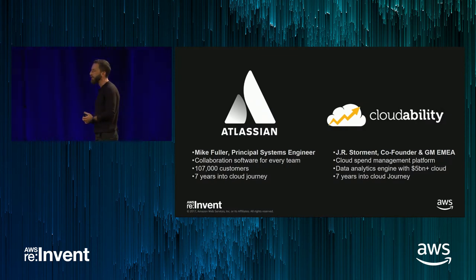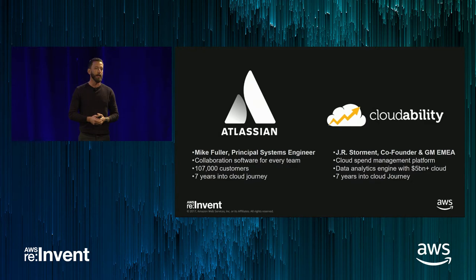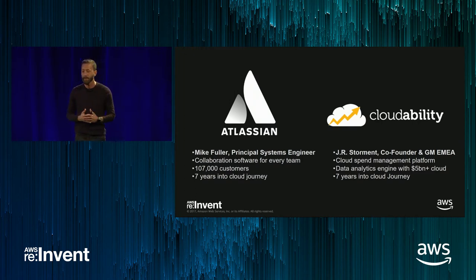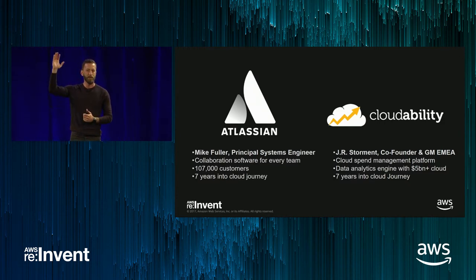So two of us are going to be speaking today. My name is JR Stormont. I'm co-founder of Cloudability and general manager for our EMEA region. Cloudability is a SaaS platform that delivers a data analytics engine focused on helping improve the economics of cloud. We work with scaled tech companies like Atlassian, and scaled enterprises like General Electric. We manage about $5 billion of cloud spend for these companies and provide tools for spend optimization and visibility.